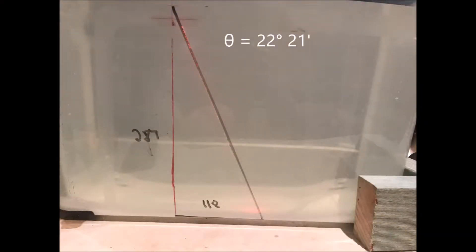This is the result of the test where 5 kilograms of sugar is used. As you can see, theta is equal to 22 degrees and 21 minutes, which is a lesser angle than the pure water test. This is because the opposite side of theta has decreased whilst the adjacent side has increased, giving a smaller angle. This means there is a smaller angle of refraction, but consequently a larger index of refraction, as the light is bent more within the medium and is slowed down.